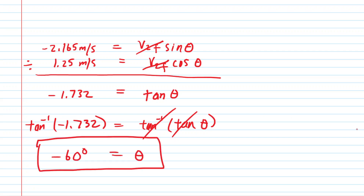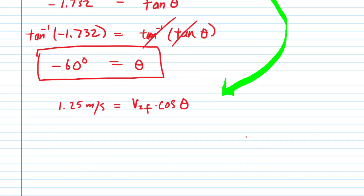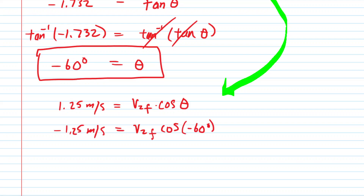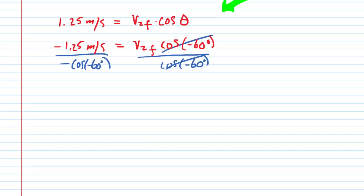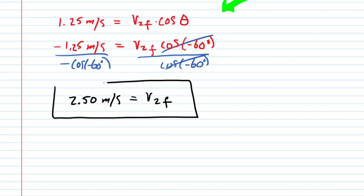The angle of negative 60 degrees is part of the answer. We also need to solve for v2-final. Taking the x equation, we plug in the angle of negative 60 degrees, then divide both sides by the cosine of that angle, canceling the cosine on the right-hand side. Punching that into the calculator gives approximately 2.50 meters per second. That is the final velocity of ball two — the other part of the answer to part A.